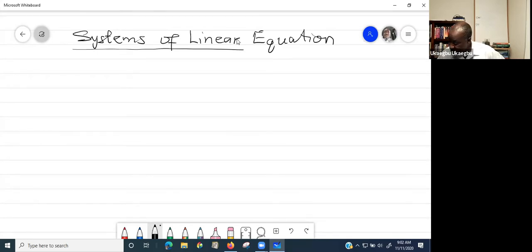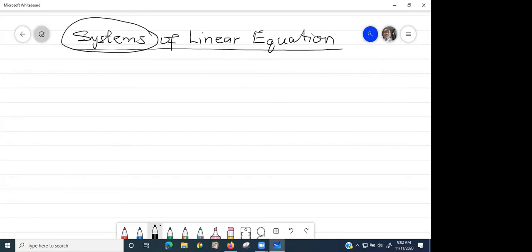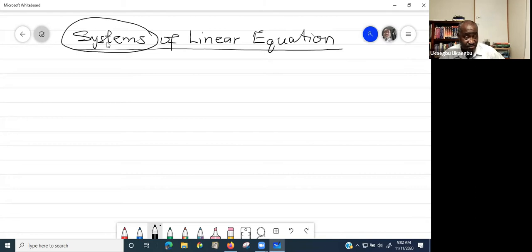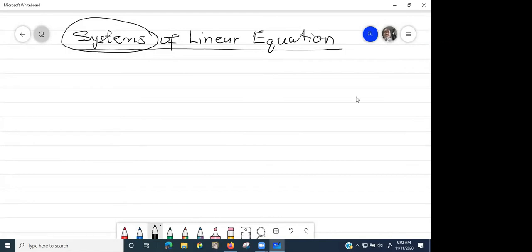So systems of linear equations. Now the word system, the English word system, what does it mean? I need a volunteer to answer that. The word system, just system alone. What was the question? What does the word, the English word system mean? Forget about math.